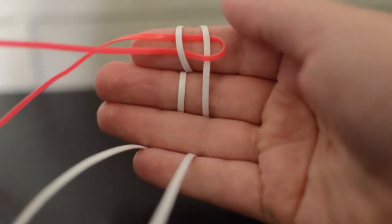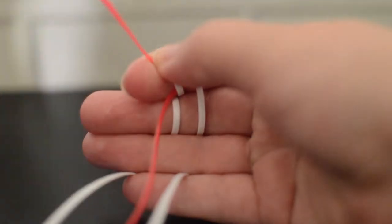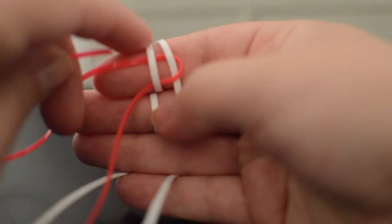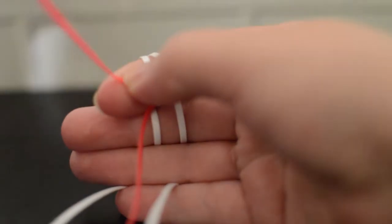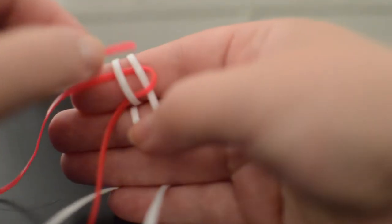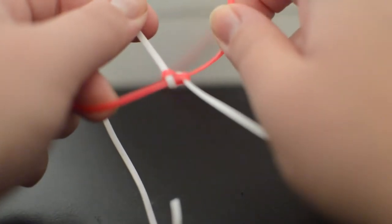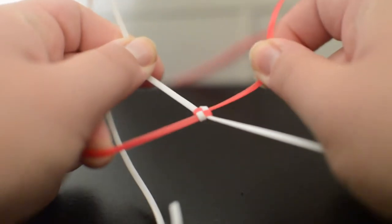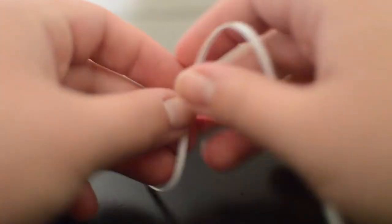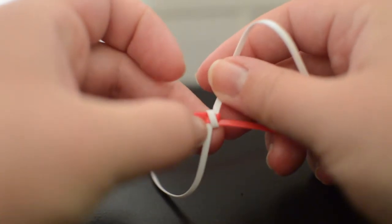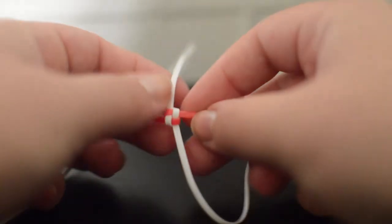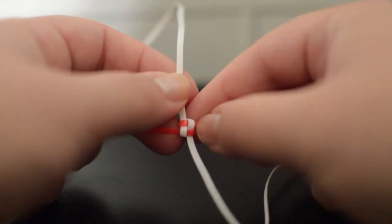Now you're going to take your left piece and you're going to go over your other piece that you went into last time, going to go over and under on the top. Then you're going to very carefully take them off of your fingers. You'll notice they're crisscrossed and pull tight.